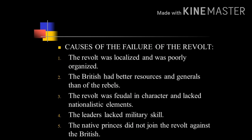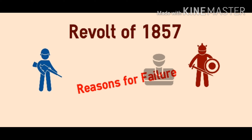The first and foremost cause of the failure of the revolt is that there was no unified command among the revolutionaries. Large parts of western and southern India remained unaffected. Many sections of the Indian population sided with the British — the upper class, the modern educated class, and the propertied class were critical of the rebels and did not support them. Lack of modern weapons and equipment, poor organisation, and lack of coordination among the states and revolutionaries also made this revolt a failure.